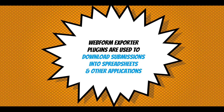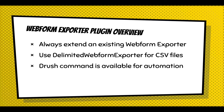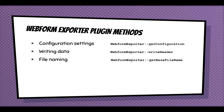Webform exporter plugins are used to download submissions into spreadsheets and other applications. When you go to the export tab, those export formats are the plugins — whether it's text delimited, tab delimited, table, or even YAML and JSON. Always extend an existing webform exporter — it's just the way they're designed. Use the delimited webform exporter for CSV files. There's also a Drush command available to automate the export, which people often don't realize.